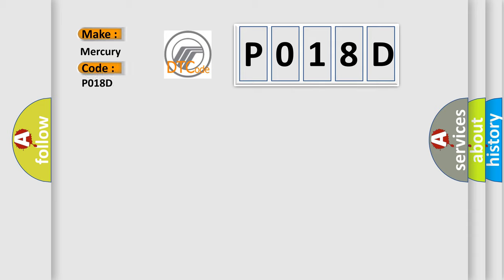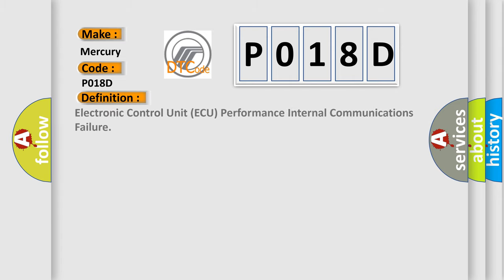Mercury car manufacturers. The basic definition is: Electronic Control Unit AQ Performance Internal Communications Failure. And now this is a short description of this DTC code.